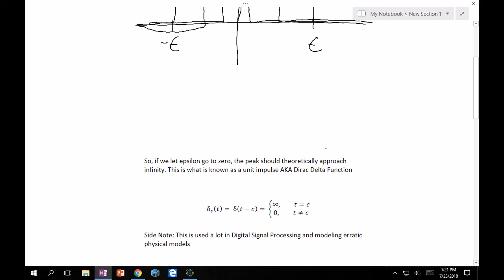And it's written as follows. It has a little sigma subscript c of t, or sigma t minus c. They're the same thing. And I really should put quotation marks here for infinity. This is what it theoretically should be. And that's what it's equal to at whatever time c that you indicated, or it's equal to zero for anywhere else.